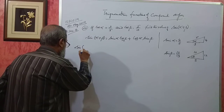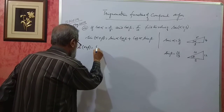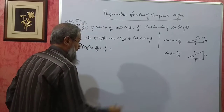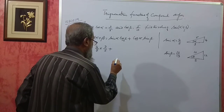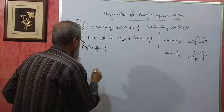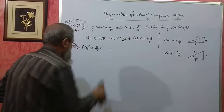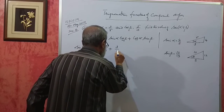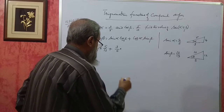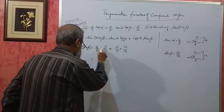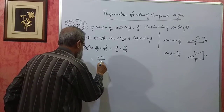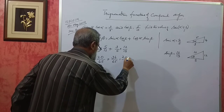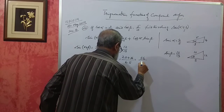Now, sine of alpha plus beta equals sin α × cos β plus cos α × sin β. That is 4/5 × 5/13 plus 3/5 × 12/13. This gives 20/65 plus 36/65. LCM is 65, so 20 plus 36 equals 56/65. That is the answer.